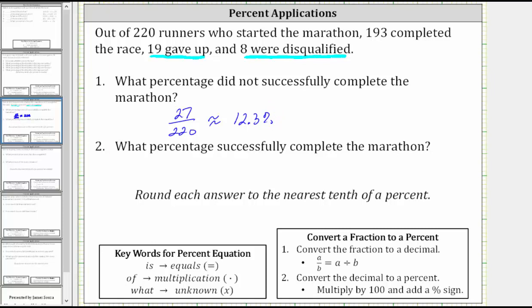So now we know approximately 12.3% of the runners did not complete the marathon successfully.